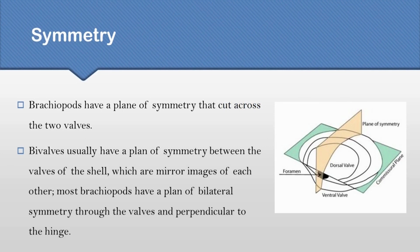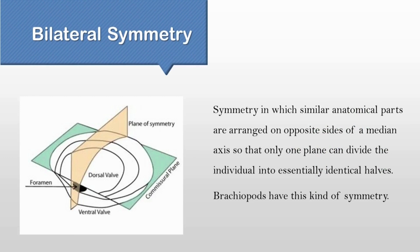Now the last topic is the symmetry of brachiopods. Brachiopods have a line of symmetry going along the top middle of their shell. Bivalves have a plane of symmetry between the valves of the shell that are mirror images of each other. Brachiopods have bilateral symmetry, which means the symmetry in which both sides are similar and identical.